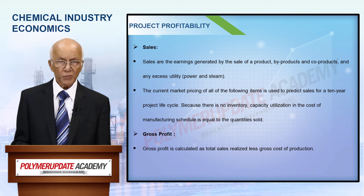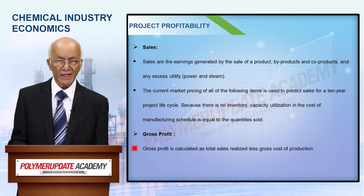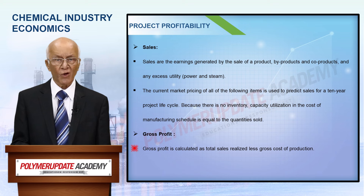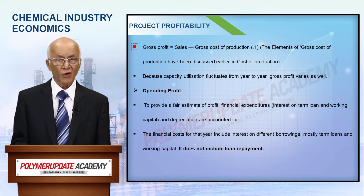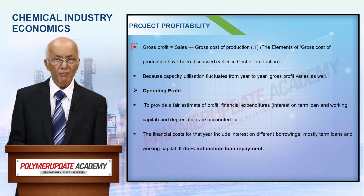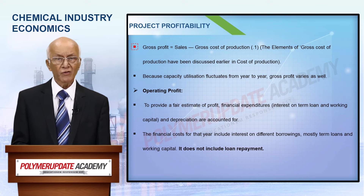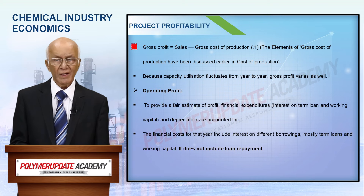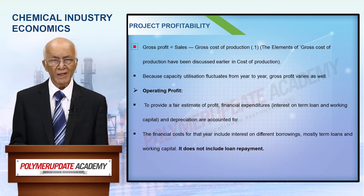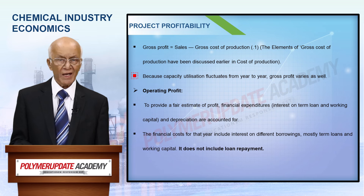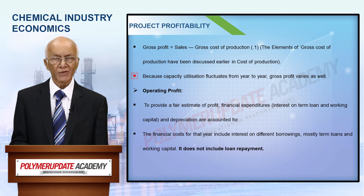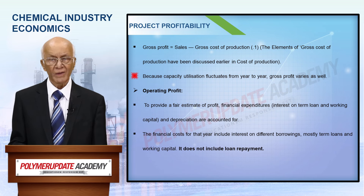Gross profit is defined as total sales realization less gross cost of production. That is: gross profit = sales minus gross cost of production. The elements of gross cost of production have been discussed earlier in the cost of production topic. Since capacity utilization varies from year to year, gross profit also varies from year to year.